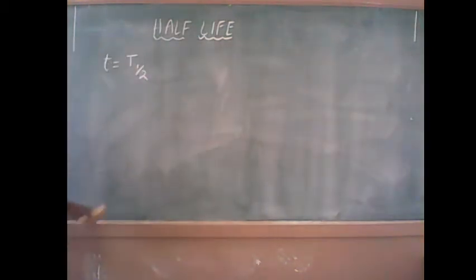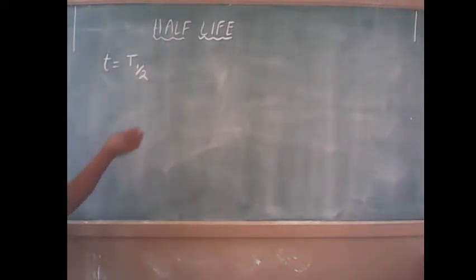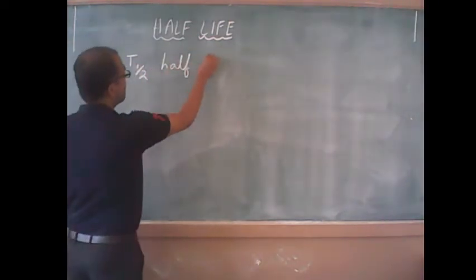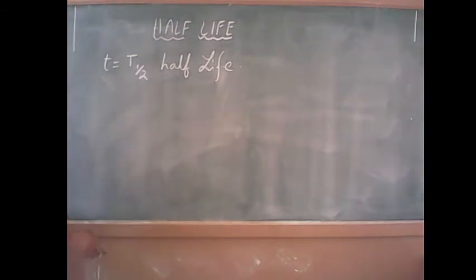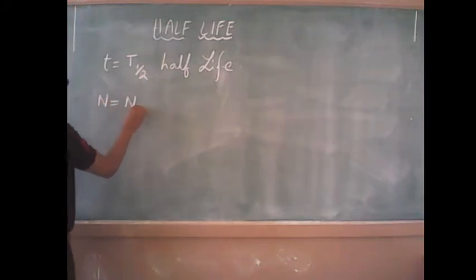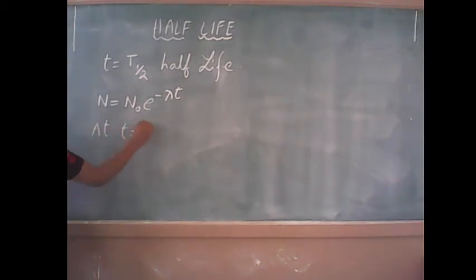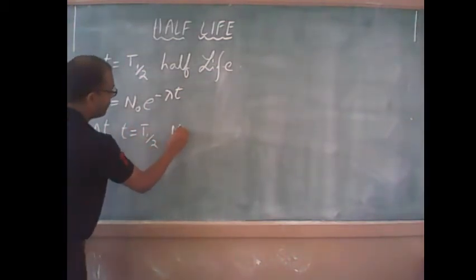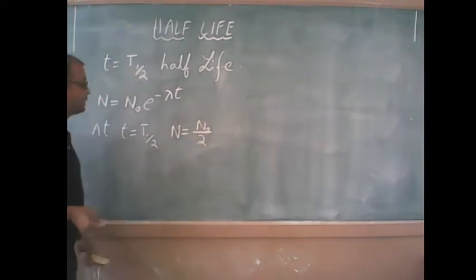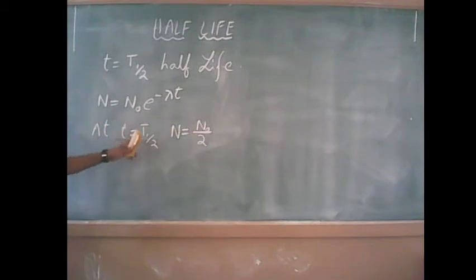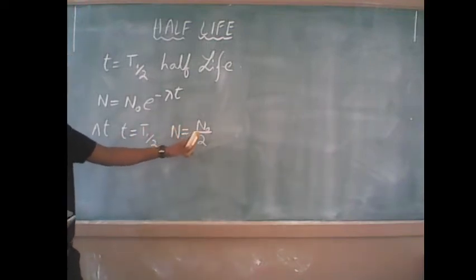For this radioactive substance, let t_half be the half-life period. As per the expression n equals n₀ e to the power minus lambda t, if t equals t_half is the half-life of the radioactive substance, then at t equals t_half the number of atoms remaining will be half the initial number. This is the definition of half-life — the number of atoms remaining at that instant will be n₀ divided by 2.